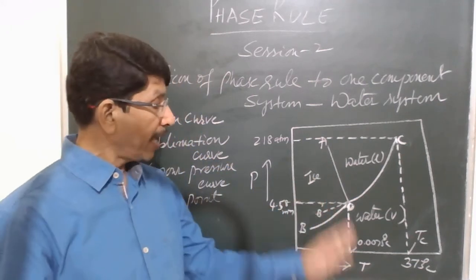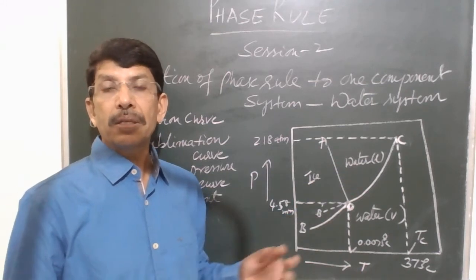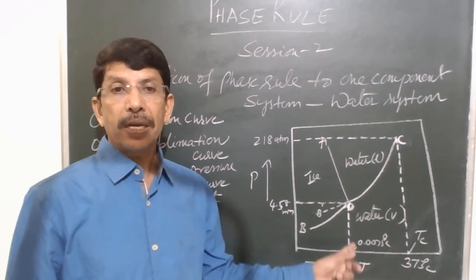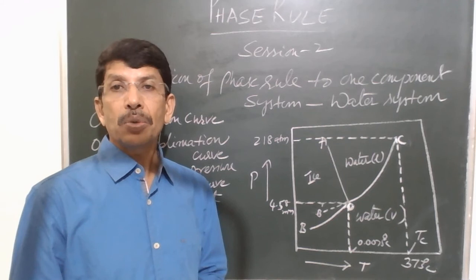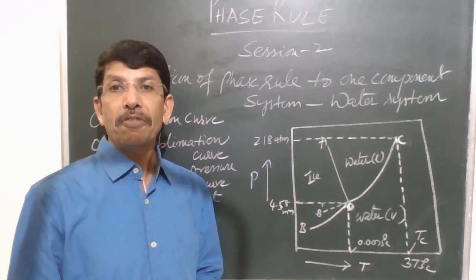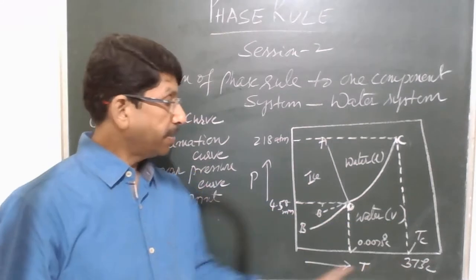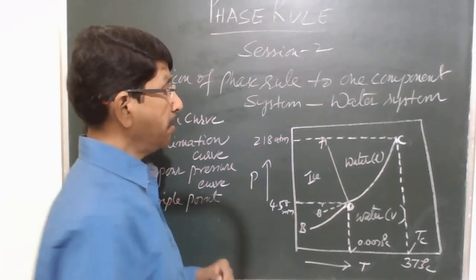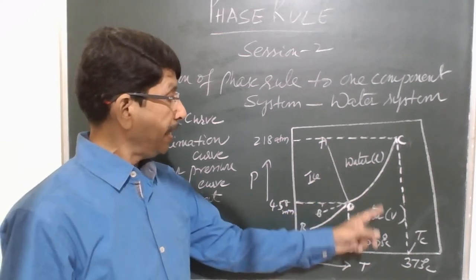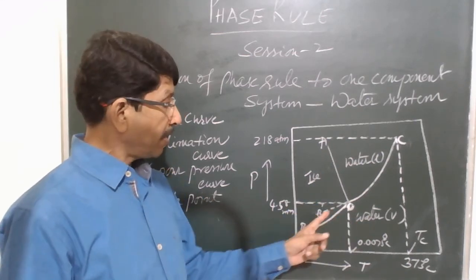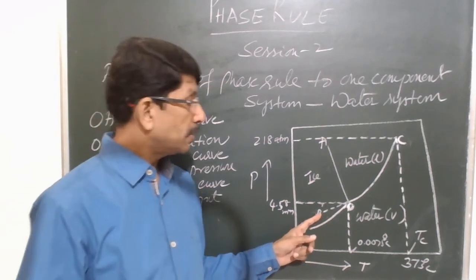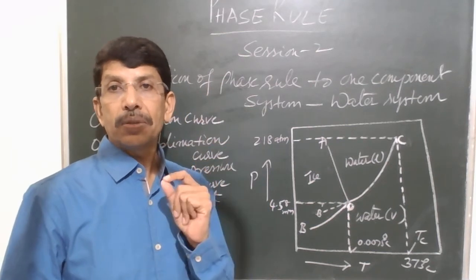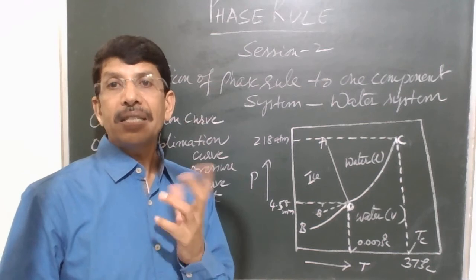This is the phase diagram of water. Phase diagrams are plots of pressure versus temperature, pressure versus composition, or temperature versus composition. Here we are considering a pressure-temperature graph of the water system. When we look at the phase diagram of water, we have three curves, three areas, and one metastable curve. I will explain metastable equilibrium shortly. A phase diagram of any system contains curves, areas, and triple points.